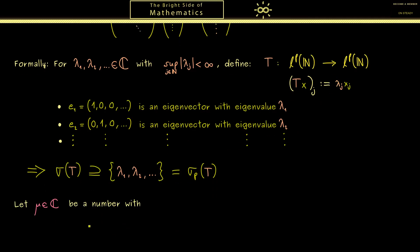Which is something that cannot happen in the finite-dimensional case. Then in the next step let's consider such an accumulation point. So let mu be a complex number with the property that it is not in the set itself, but in the closure of the set.